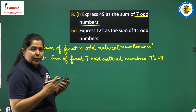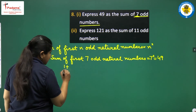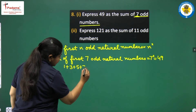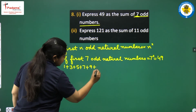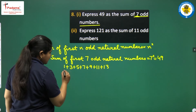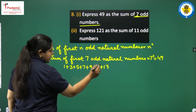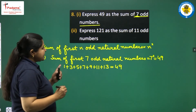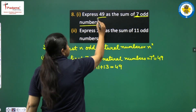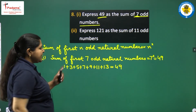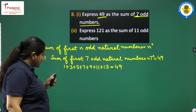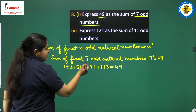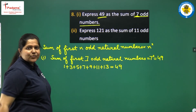We simply need to write down the odd numbers starting from 1: 1, 3, 5, 7, 9, 11, 13. Are they 7? 1, 2, 3, 4, 5, 6, 7 — yes. Their sum equals 49. We have expressed 49 as the sum of 7 odd numbers, because the first 7 odd numbers sum to 7 squared, which is 49.